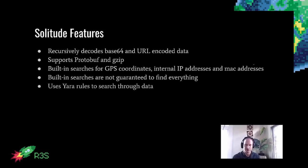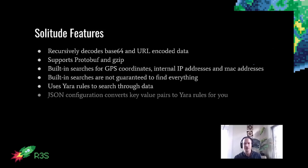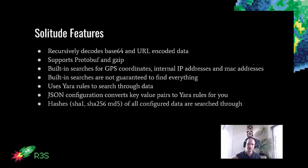The goal is for this to be an open source project where more people contribute more types of searches and regular expressions so we can find data automatically more easily. Behind the scenes, we use Yara — a way to create a rule set where you can search for specific strings using regular expressions and conditionals, often used for malware analysis. If you don't know how to write Yara rules, we've created a JSON configuration file which converts the key-value pairs you enter into Yara rules for you. We also hash SHA-1, SHA-256, and MD5 all of the data you configure, to search for those hashes. And lastly, we support WebSockets.